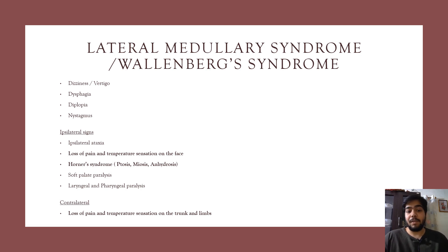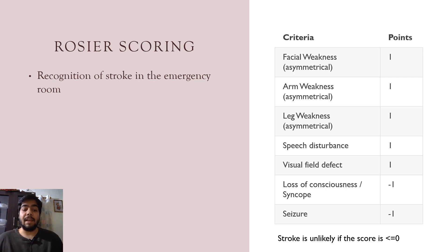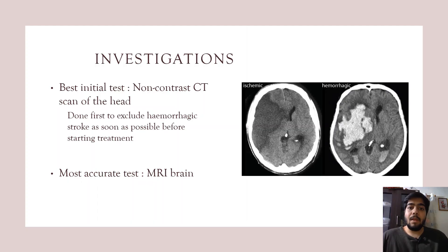Contralateral signs include loss of pain and temperature sensation on the trunk and limbs. For recognition of stroke in the emergency room, use the ROSIER scoring system, which includes: facial weakness, arm weakness, leg weakness, speech disturbances, visual field defect, loss of consciousness or syncope, and seizure. Stroke is unlikely if the score is less than or equal to zero.